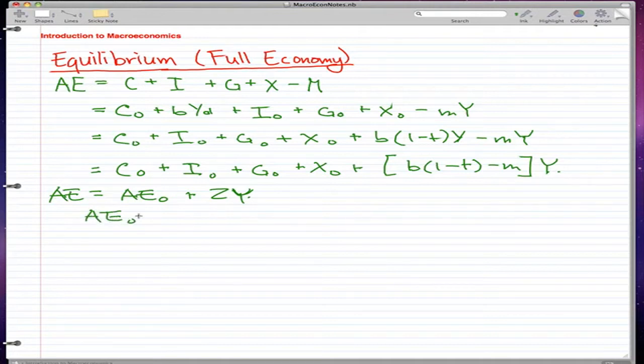That AE0 is actually equal to C0 plus I0 plus G0 plus X0. And that Z is actually B times 1 minus T minus M. And that is our full economy.